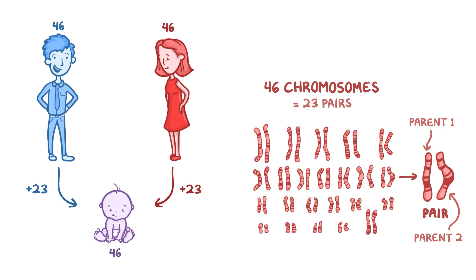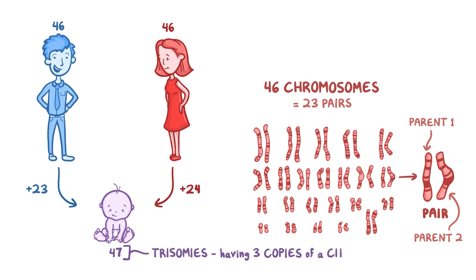Now, what if someone contributes one too many? Say, dad contributes 23, and mom gives 24. Is that possible? Well, the short answer is yes, and that's the basis of trisomies — in other words, having three copies of a particular chromosome.